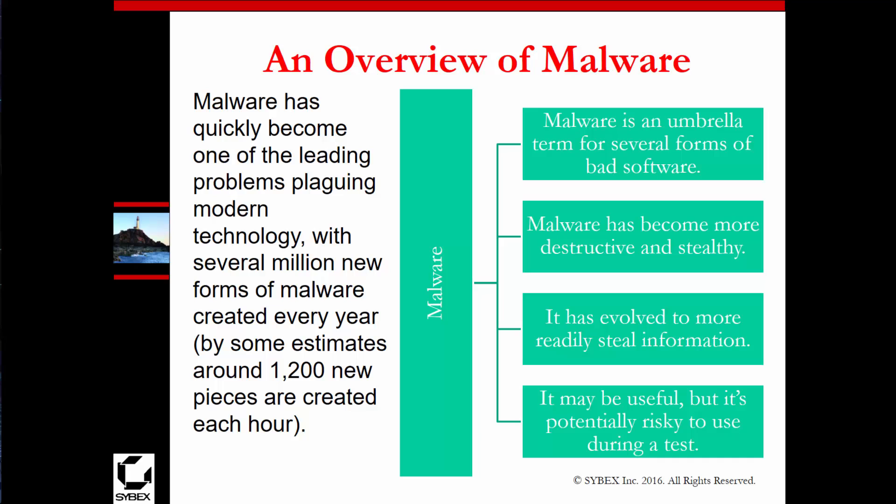There have been some real good estimates on how much malware is created. Typically, the common accepted amount is between 1,000 and 1,500 new pieces of malware every hour. Our book says 1,200, but I've seen sources between both. It's more than just malicious code — it's evolving to readily steal information or to steal data.